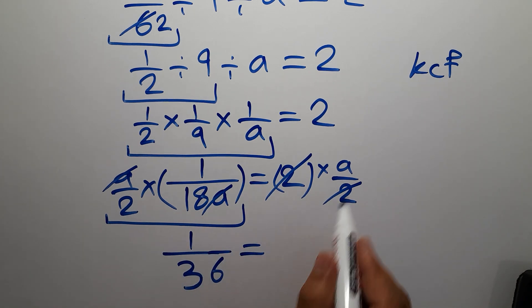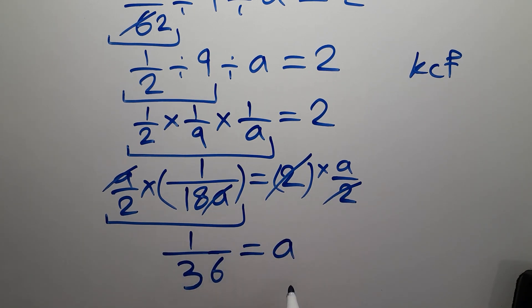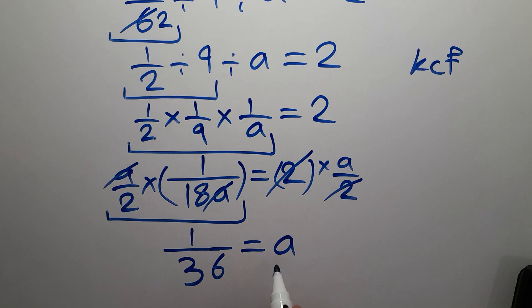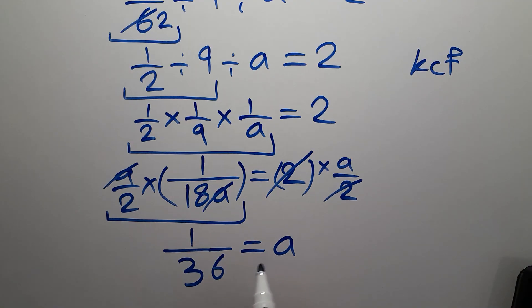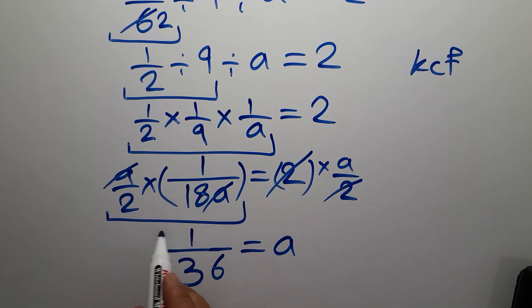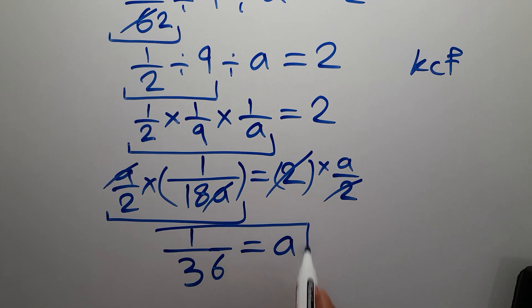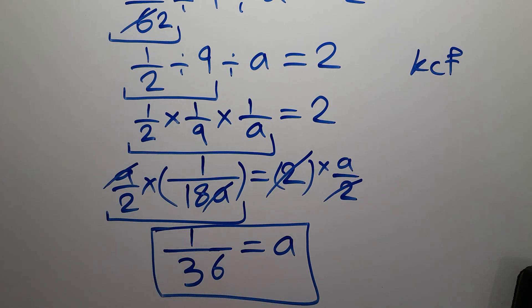That means our final value for a is 1 over 36. This is our final answer.